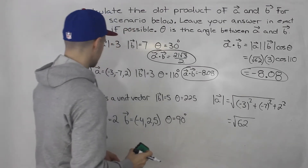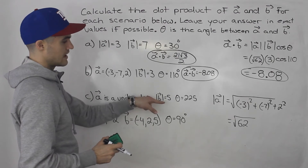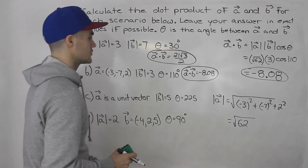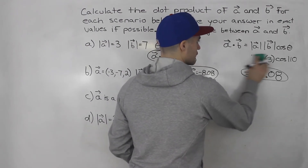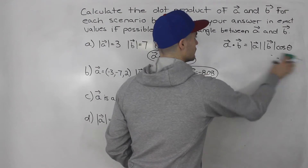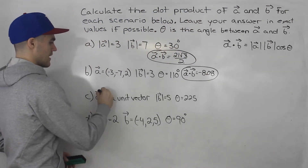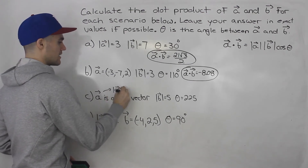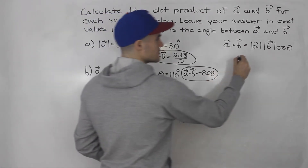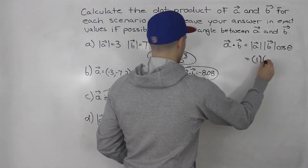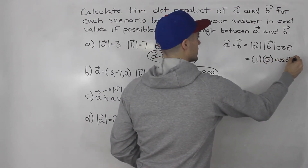Moving on to part C. We've got vector A as a unit vector, the magnitude of B is 5, and the angle in between them is 225. Same formula. Now, if vector A is a unit vector, that means the magnitude of A is 1. So we can plug all of that in: magnitude of A is 1, magnitude of B is 5, and then we've got cos of 225.